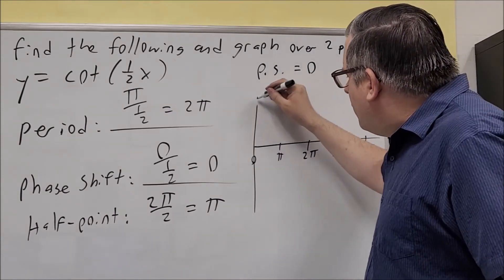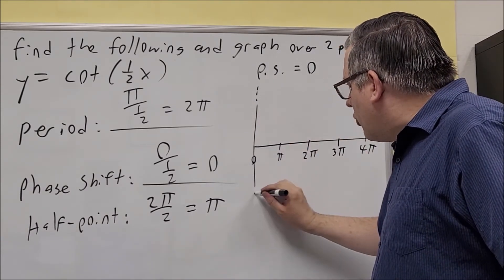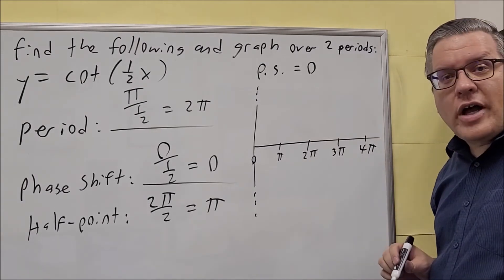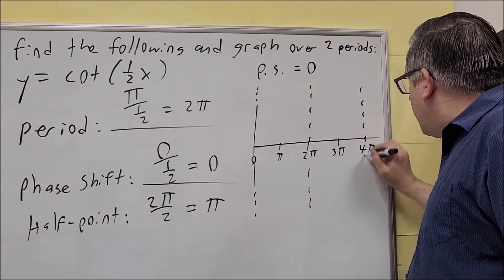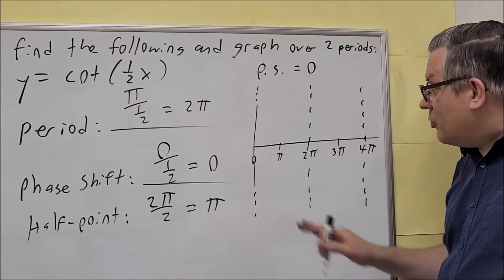Now the first one gets the vertical asymptote, so the y-axis is a vertical asymptote here. The middle one is a vertical asymptote, and then the last one gets a vertical asymptote.